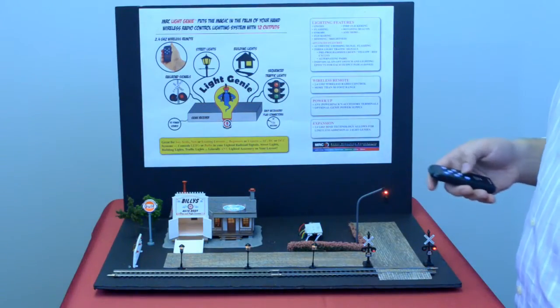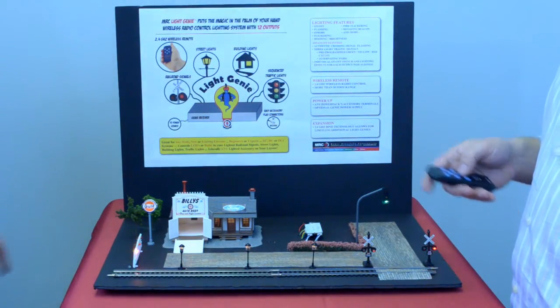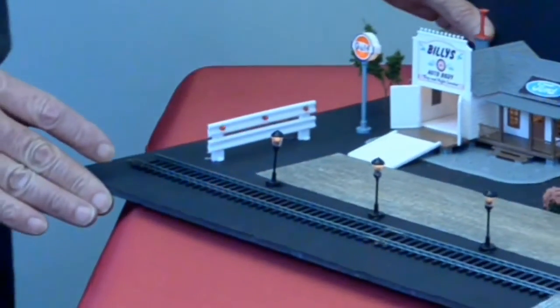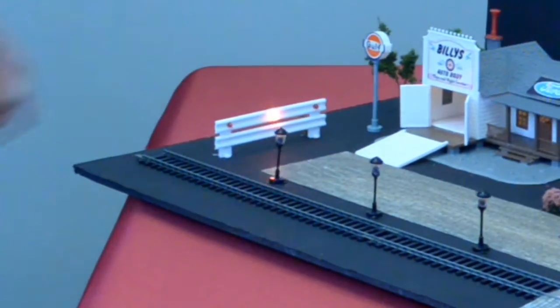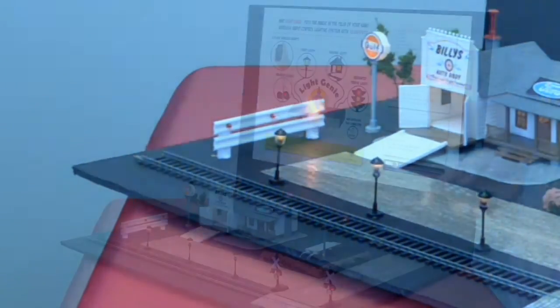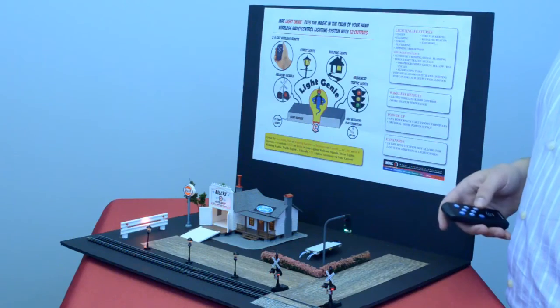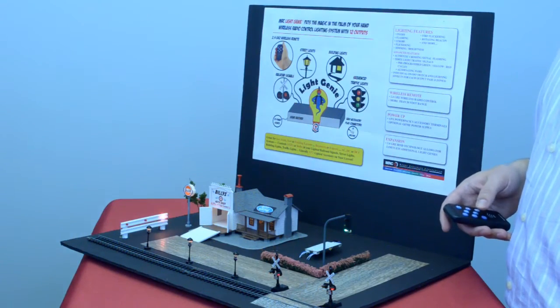And finally, number five, we're going to show you what rear lights indicating. But as with 20 different lighting effects, we can show many different things. These are some of the features that Light Genie has. They're over 20.